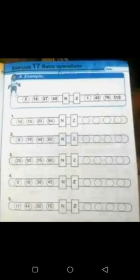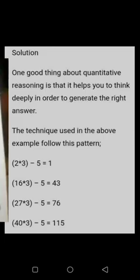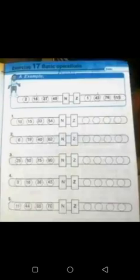Now how do we arrive at this? There is something that the numbers on the left has to do with the numbers on the right. Let's begin. You notice the first number on the left is 2, so you say 2 times 3, that will give you 6, then you take away 5 from 6, then you have 1, which is the first number on the right.